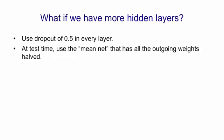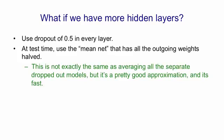So we use a net that has all of the units, but the weights are halved. When we have multiple hidden layers, this is not exactly the same as averaging lots of separate dropped-out models, but it's a good approximation, and it's fast.